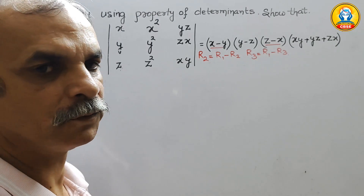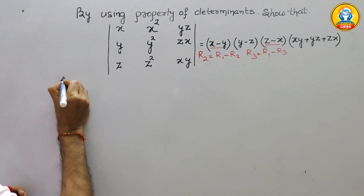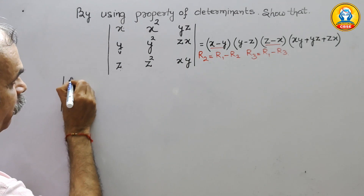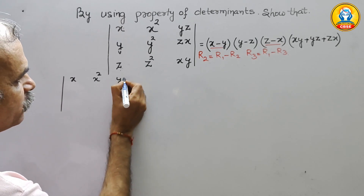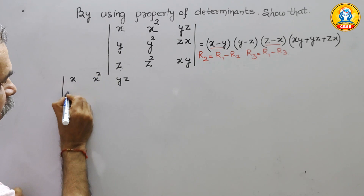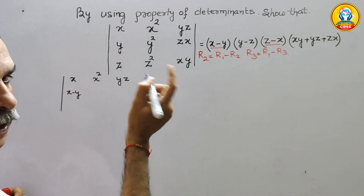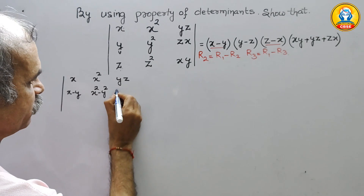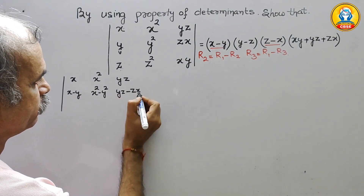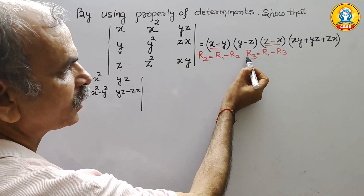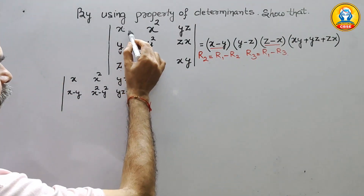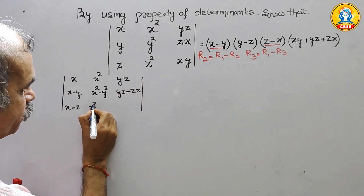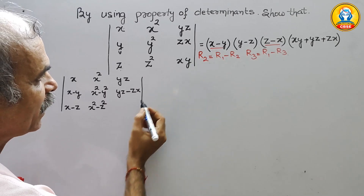Now we will solve this. For the first row, don't disturb it — we write x, x², and yz. Next comes x minus y, then x² minus y², and then yz minus zx. For the third row, R1 minus R3 gives x minus z, then x² minus z², then yz minus xy.